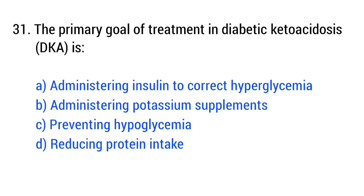Question No. 31. The primary goal of treatment in diabetic ketoacidosis is? The right answer is option A: Administering insulin to correct hyperglycemia.